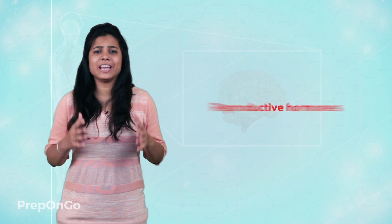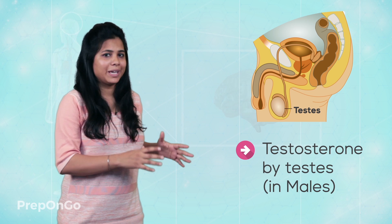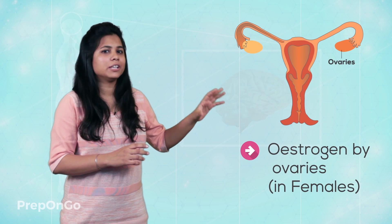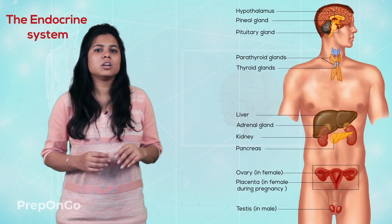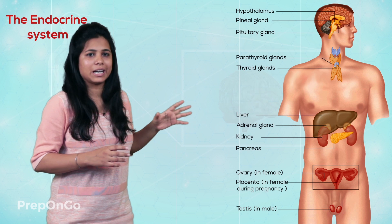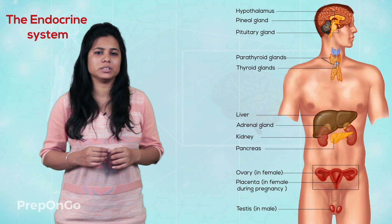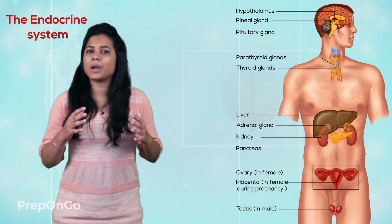Finally, we come to the reproductive hormones. Puberty brings changes to the normal body which we go through in our teenage years. This is because of the secretion of testosterone by the testes in males and estrogen by the ovaries in females. We have now seen the different hormones secreted by the different glands, which brings us to the end of the hormonal system of human beings. In the next video, we will be seeing the plant coordination system and the plant hormonal system.